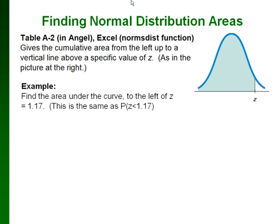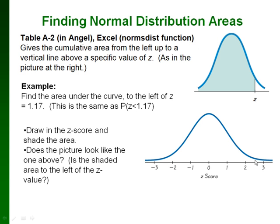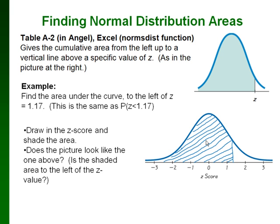Here's an example. If we want to find the area under this curve to the left of z equals 1.17 — the same as finding the probability that z is less than 1.17 — draw your own little distribution curve, draw in the z-score, and shade the area in the direction that you need to. So we draw in 1.17 on the graph and shade to the left. We want to see if this picture matches the one for the table; if it does, we can look up the z value in the table or use Excel directly.